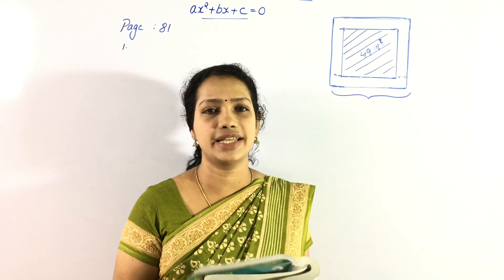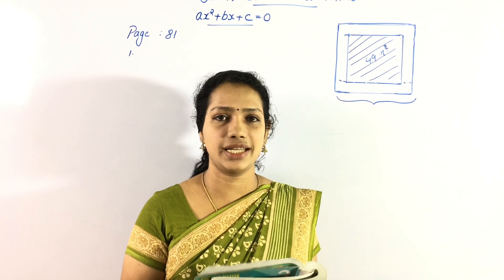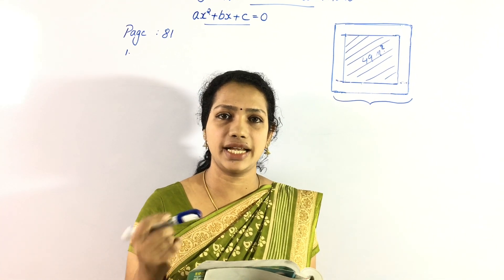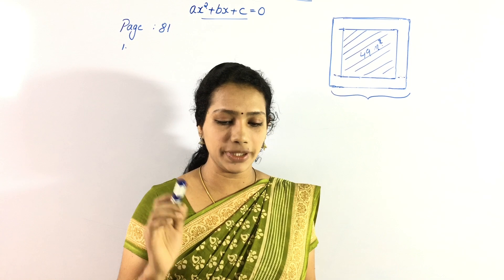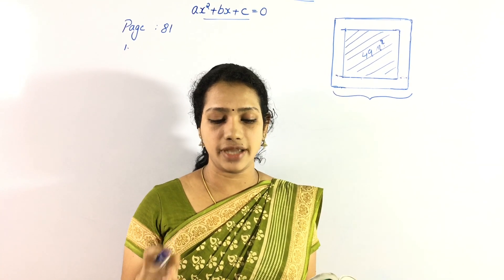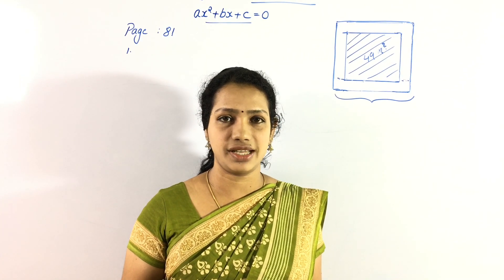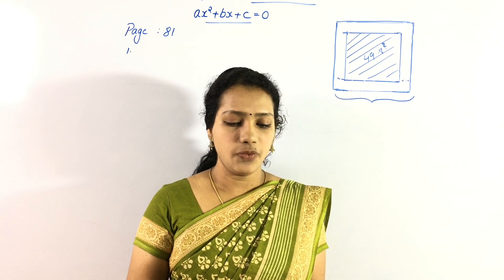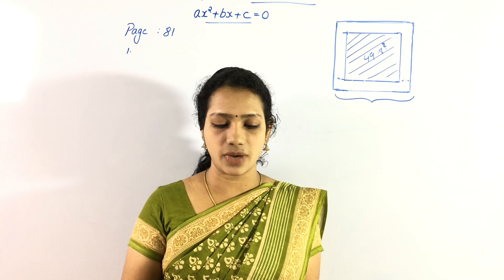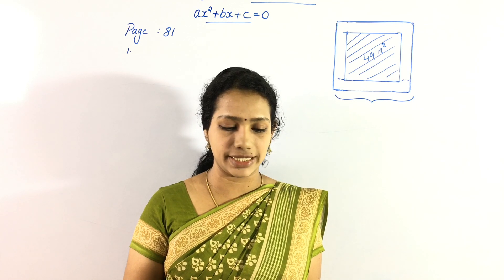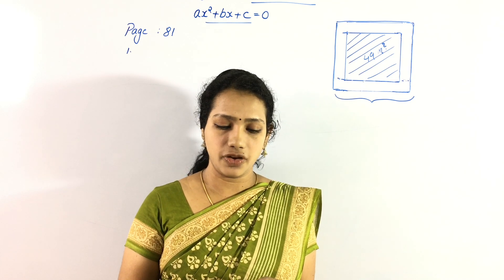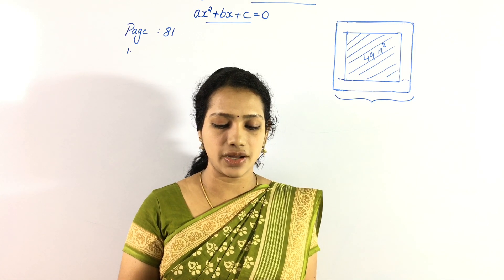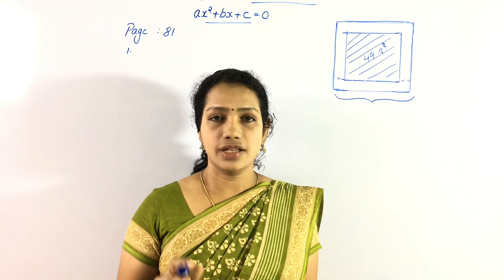We have to solve these. First of all, we will go to page number 81. Question number 1: When each side of a square was reduced by 2 meters, the area became 49 square meters. What was the length of a side of the original square?